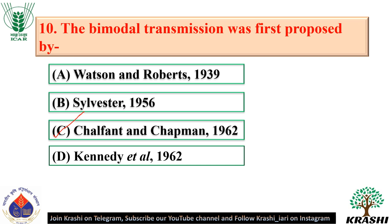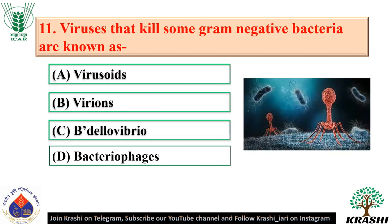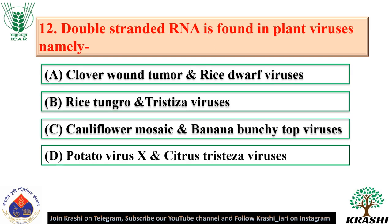Question number 11: Viruses that kill some gram-negative bacteria are known as bacteriophages. Question number 12: Double-stranded RNA is found in plant viruses; the correct answer is option A: clover wound tumor and rice dwarf viruses.